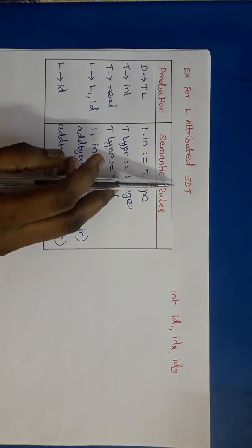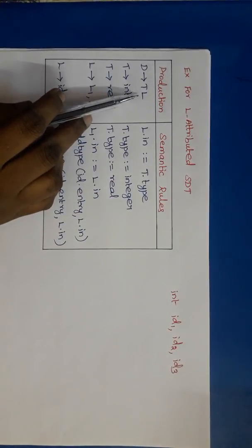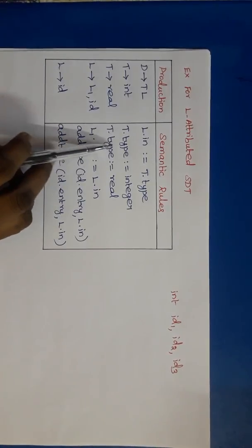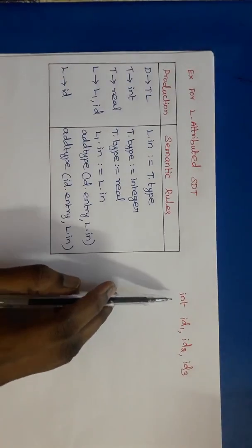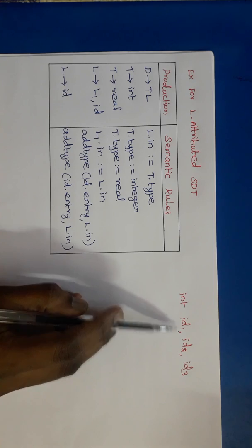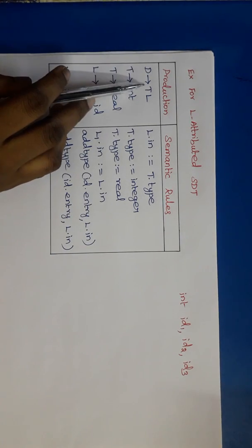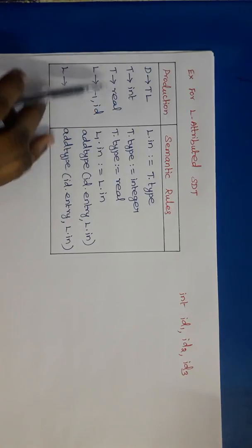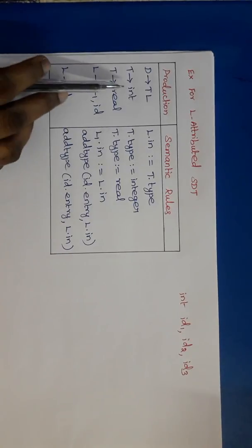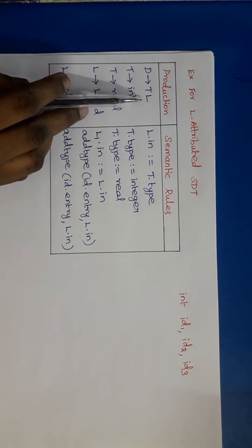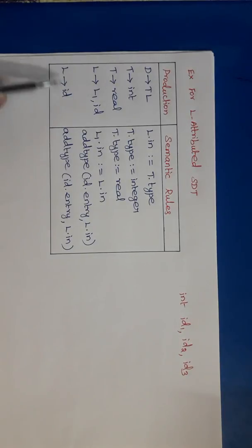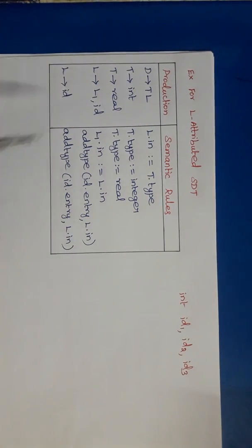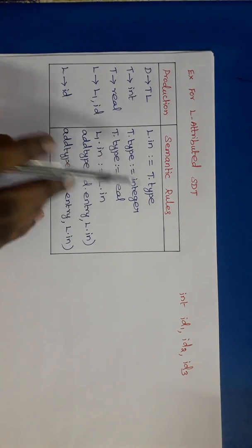Next, an example for L-attributed SDT, which can have both synthesized and inherited attributes. The non-terminal symbol L is having inherited attribute and T is having the synthesized attribute type. This is the production for declaration statements. A declaration statement tends to T L, where T tends to integer or real, and L tends to L comma ID or ID — to get the list of identifiers.